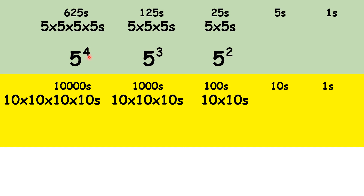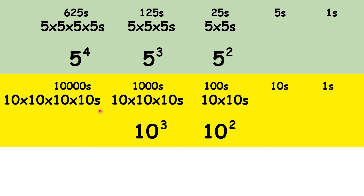You might not have seen 'to the power of 4' before, but you can probably work out what it means. Notice that we can do the same with base 10. Rather than writing hundreds as our place value heading, we could write 10 squared. Then instead of thousands, we could have 10 cubed. Then instead of ten-thousands, we could have 10 to the power of 4.